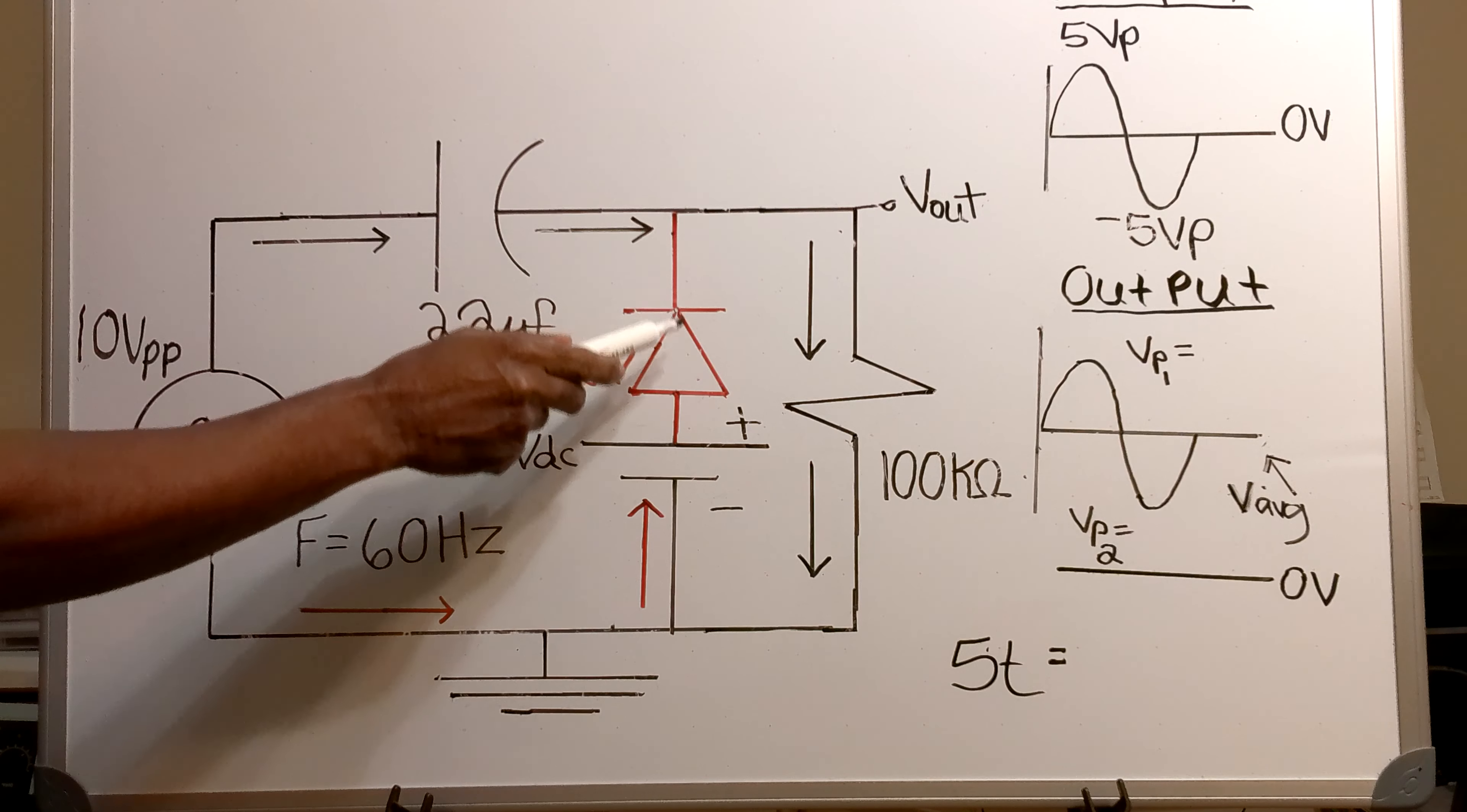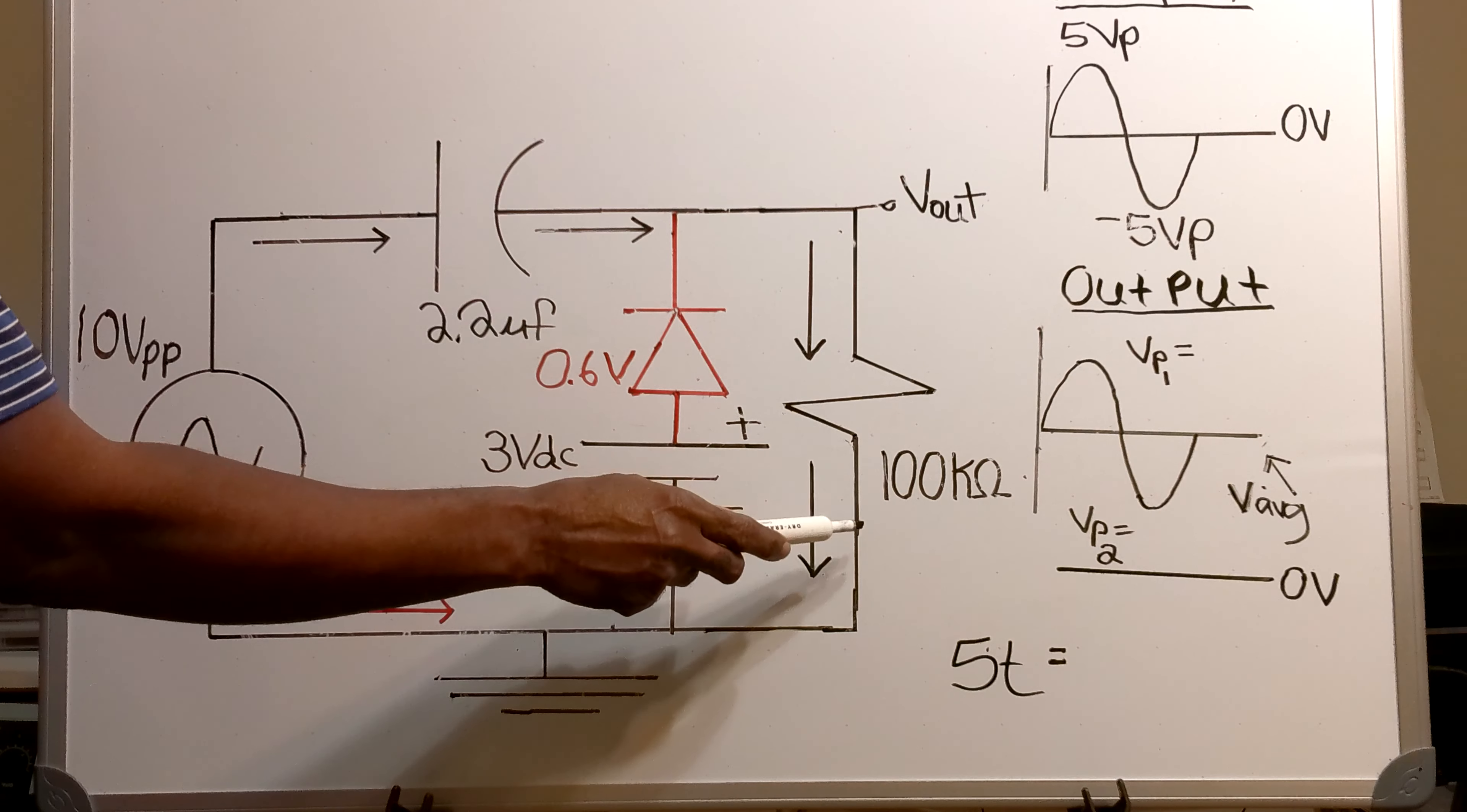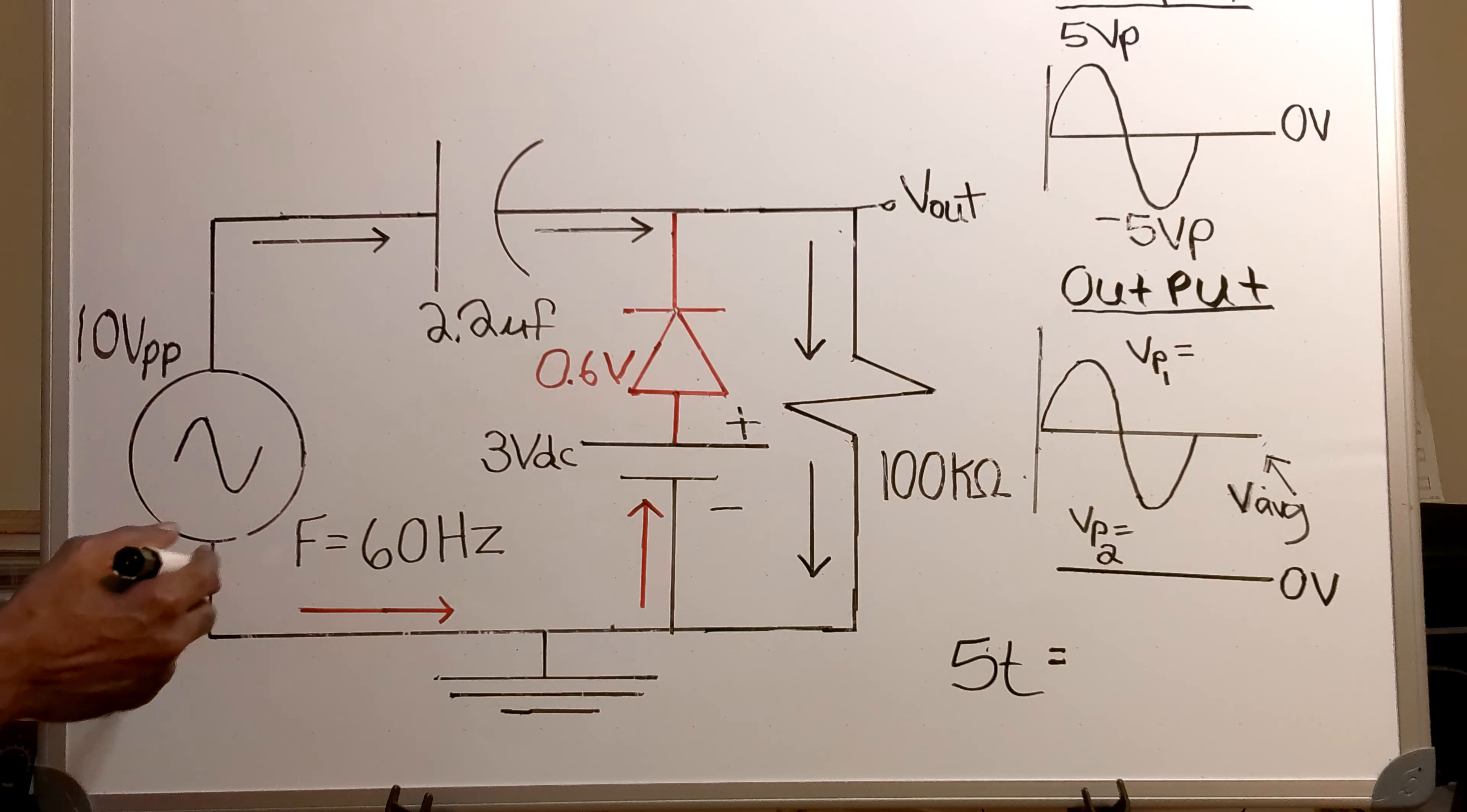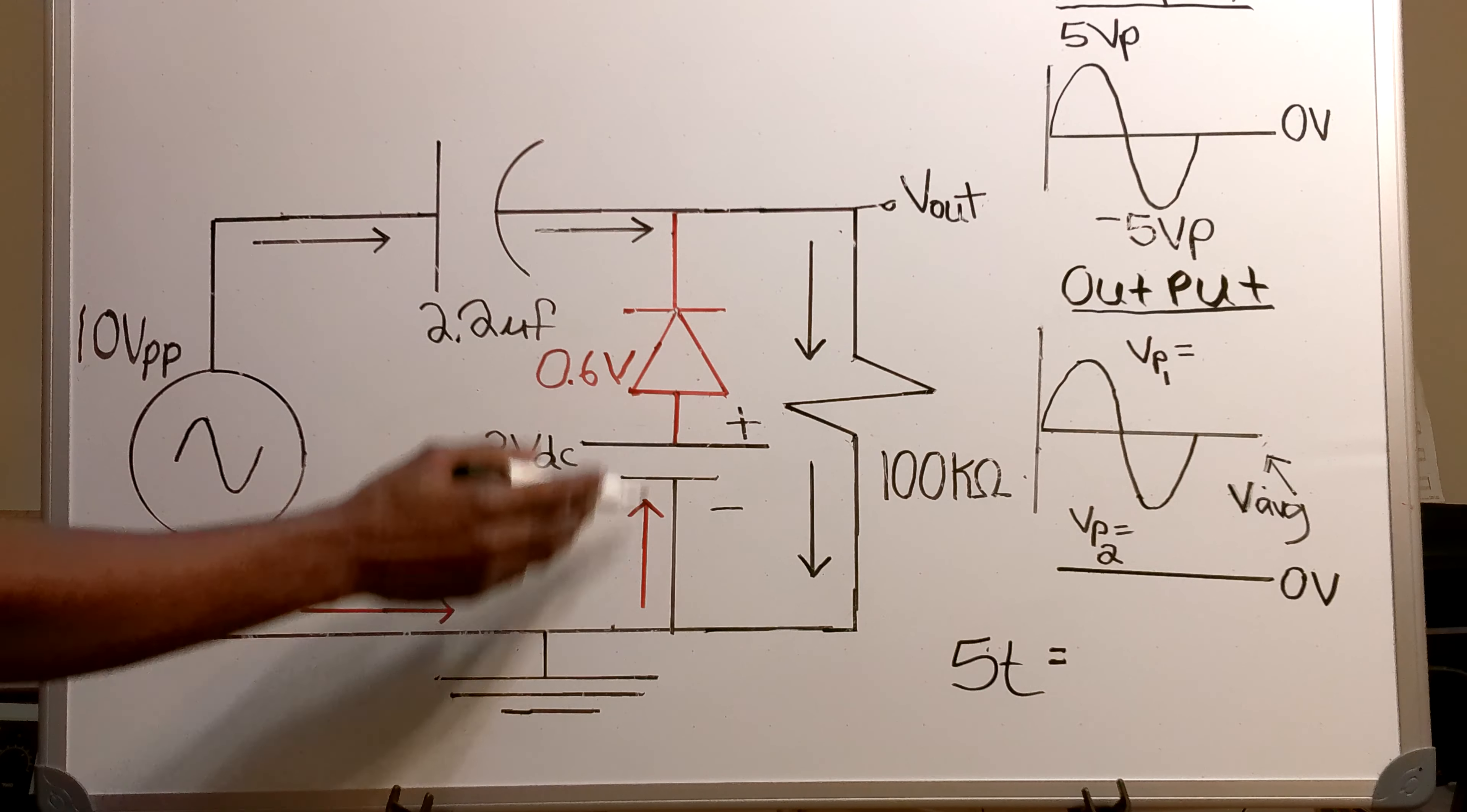So it's a 10 volt peak to peak signal on the input in series with a 2.2 microfarad capacitor, in series with a parallel combination of a diode, a 3 volt DC source, and a 110 ohm resistor.